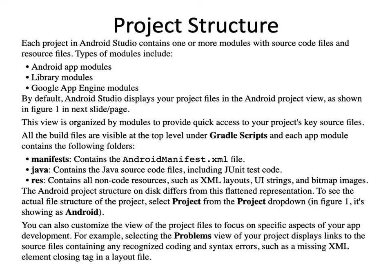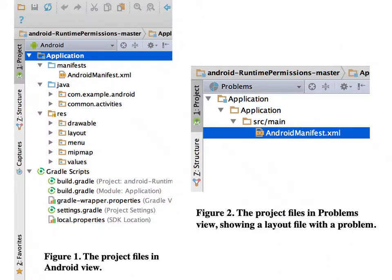The Android project structure on disk differs from this flattened representation. To see the actual file structure of the project, select 'Project' from the project drop-down. You can also customize the view of the project file to focus on specific aspects of your application development. For example, selecting the 'Problems' view displays links to source files containing any recognized coding and syntax errors, such as a missing XML element closing tag in a layout file.